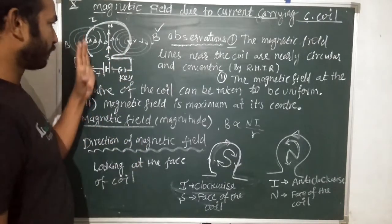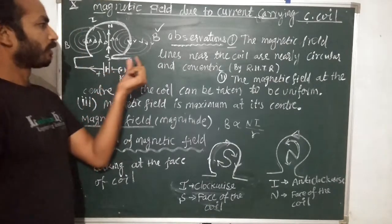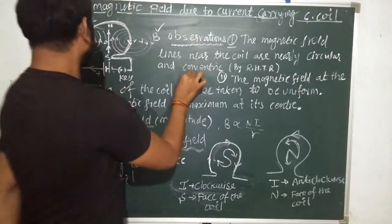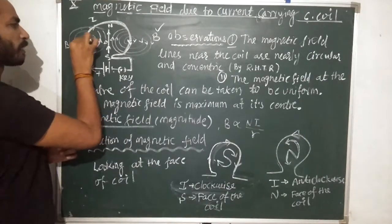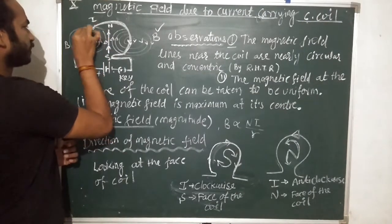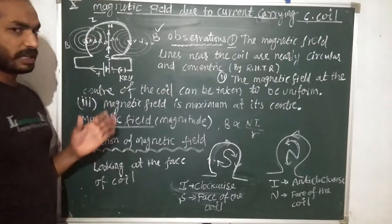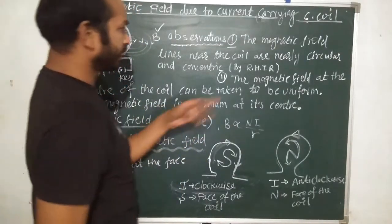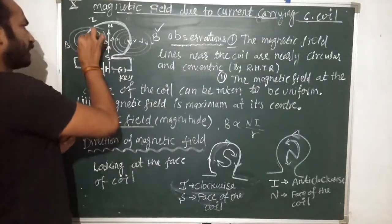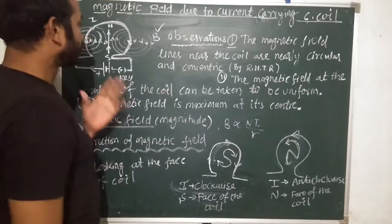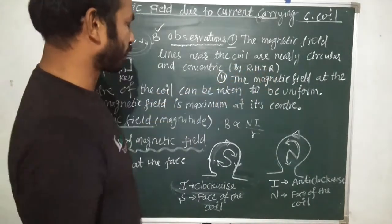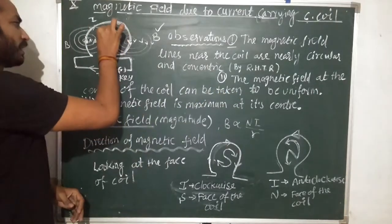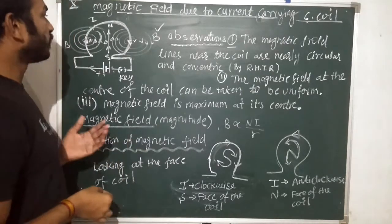Now let's look at the observations. The magnetic field lines near the coil are nearly circular and concentric. We can look at the current-carrying circular coil and take a small part as a straight conductor, then calculate the field lines using the right-hand thumb rule. The magnetic field at the center of the coil can be taken to be uniform.